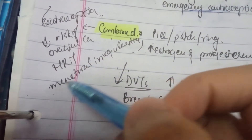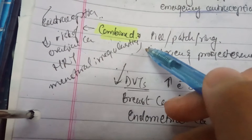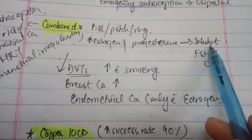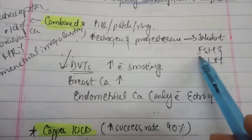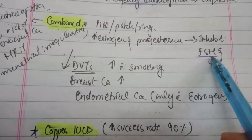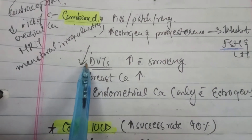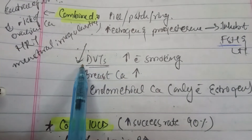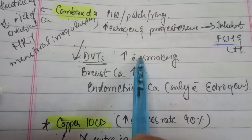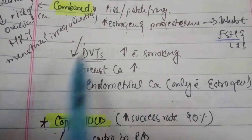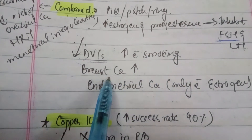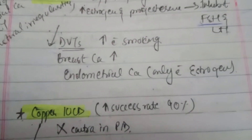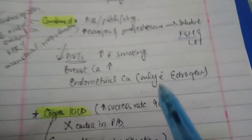Combined pills increase estrogen and progesterone, which inhibit FSH and LH — inhibition of FSH is the main mechanism, important to mark for MCQs. Risk factors include DVTs, especially with smoking. Breast cancer risk increases with both estrogen and progesterone, while endometrial carcinoma risk increases with estrogen only.